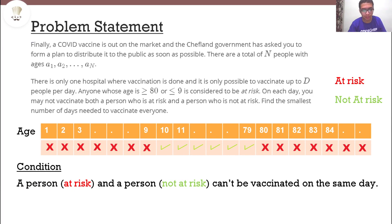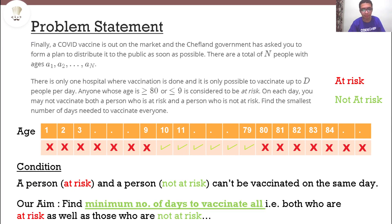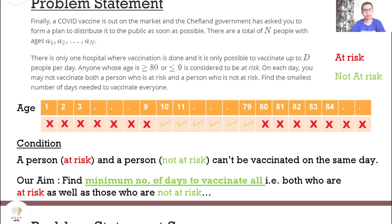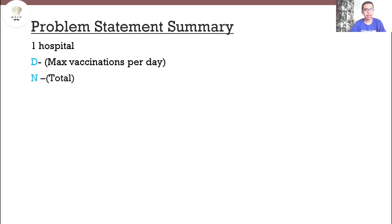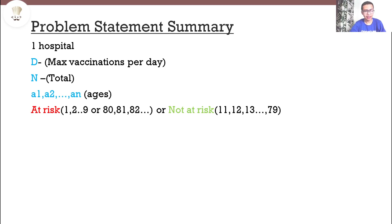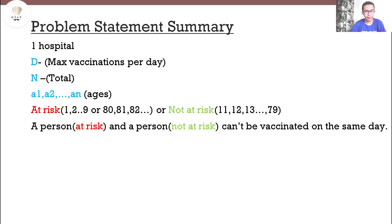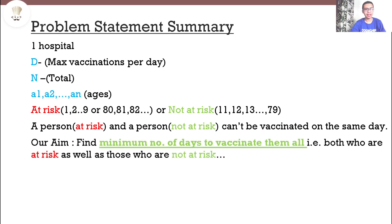Our aim is to find the minimum number of days to vaccinate all people — both those who are at risk and those who are not. To summarize: one hospital, D is the maximum vaccinations per day, N is the total people to vaccinate, people are categorized as at risk or not at risk based on age, and the two categories cannot share a vaccination day.